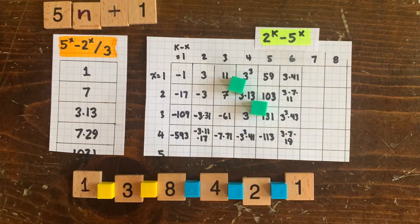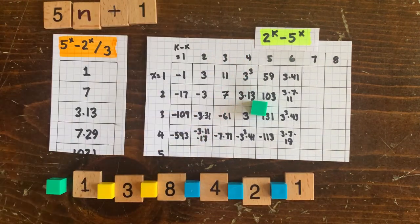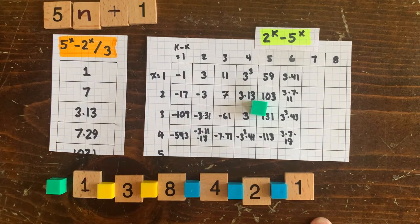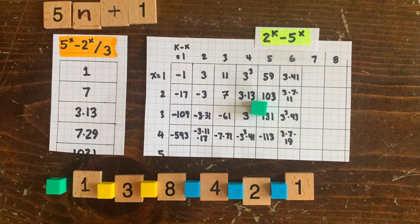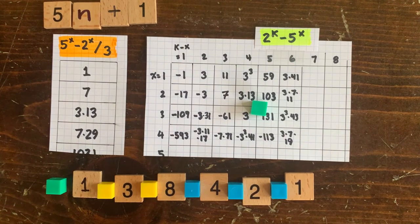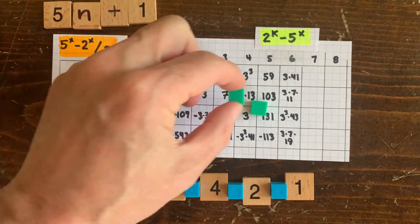You can see 5n plus 1's circuit loop for the number 1 is a lot longer than the 3n plus 1's. It also shows that the circuit loop for 1 doesn't have to be in the upper left-hand corner like it was in the 3n plus 1 chart.